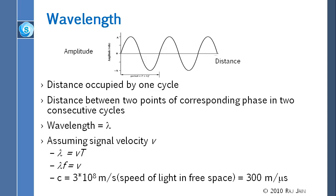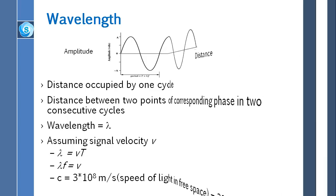The speed of electricity in a wire is 200 meters per microsecond — that's different and lower. So: 300 meters per microsecond equals 3×10⁸ meters per second — that is the speed of light in free space. Given lambda (wavelength), f (frequency), and nu (speed), you can calculate any one from the other two.